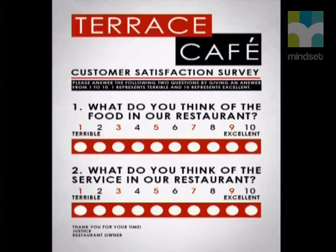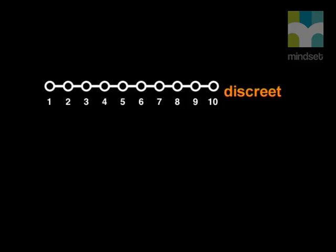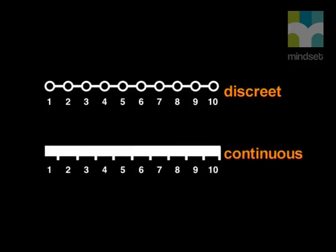The data collected from our survey has specific allowed values only — there is no room to give a rating of six and a half. This type of data is known as discrete data. Grouped data can have any value over a range or interval, so a rating of 5.8 out of ten would be allowed. For grouped data the values are not discrete but continuous.